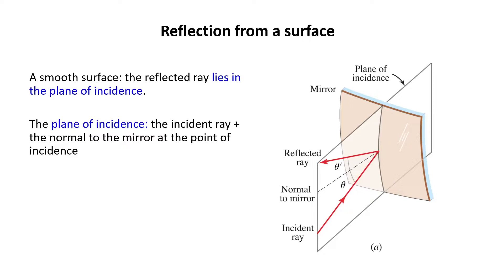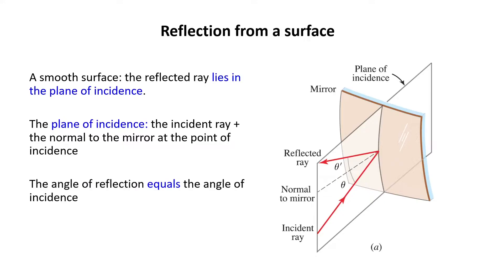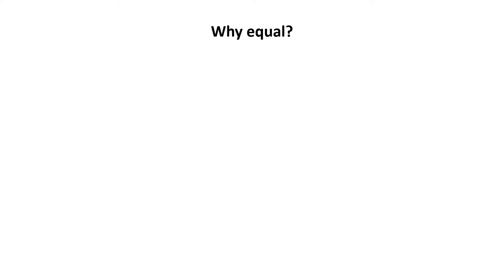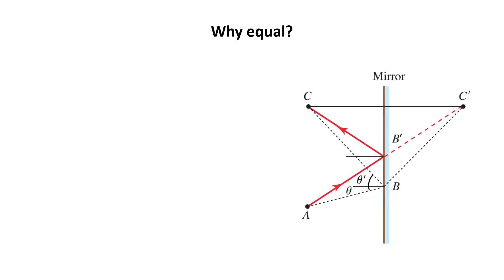We also measure the incidence angle and reflection angle with respect to the normal. As you see here, theta is the incidence angle and theta prime is the reflection angle. From experiments, we know that theta equals theta prime. We can prove this statement using ray optics, but in the future we will see how to prove it using electromagnetic optics. For simplicity, we consider a plane mirror, but the equality is valid for curved surfaces as well.